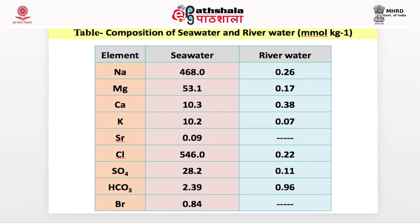A table shows the composition of sea water and river water in millimoles per kilogram. In sea water versus river water: sodium 468 vs. 0.26, magnesium 53.1 vs. 0.17, calcium 10.3 vs. 0.38, potassium 10.2 vs. 0.07, strontium 0.09 vs. 0, chloride 546 vs. 0.22, sulphate 28.2 vs. 0.11, bicarbonate (HCO₃) 2.39 vs. 0.96, and bromide 0.84 vs. 0.